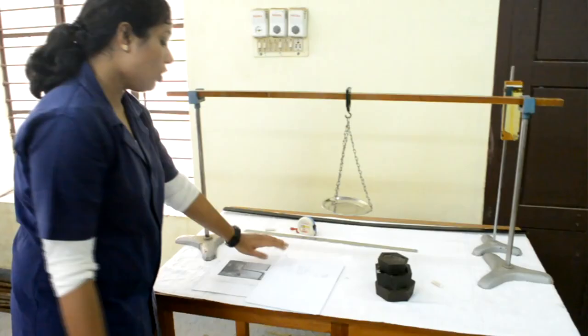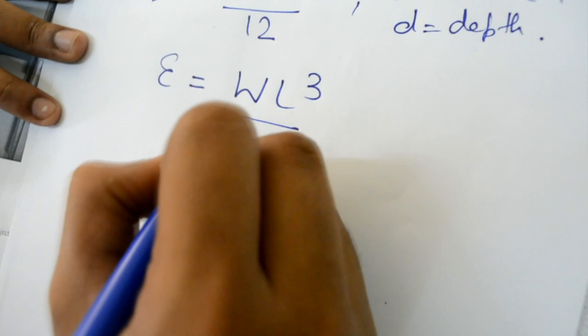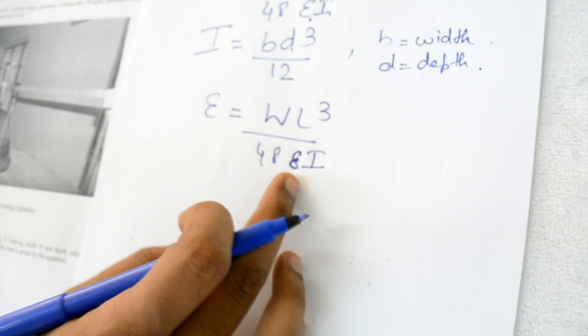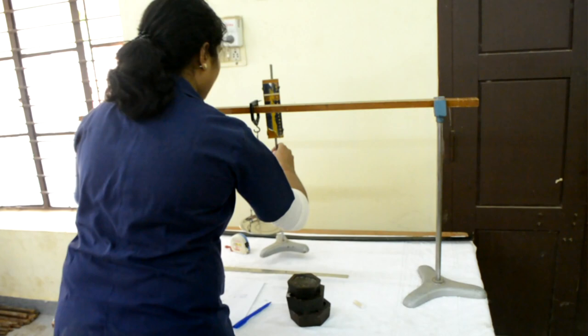In order to find the modulus of elasticity of this beam, we have to rearrange this equation. So E equals WL cubed by 48 delta I. So for getting W by delta we have to conduct this deflection test. So for that, keep the graduated scale. Make the pointer to zero.